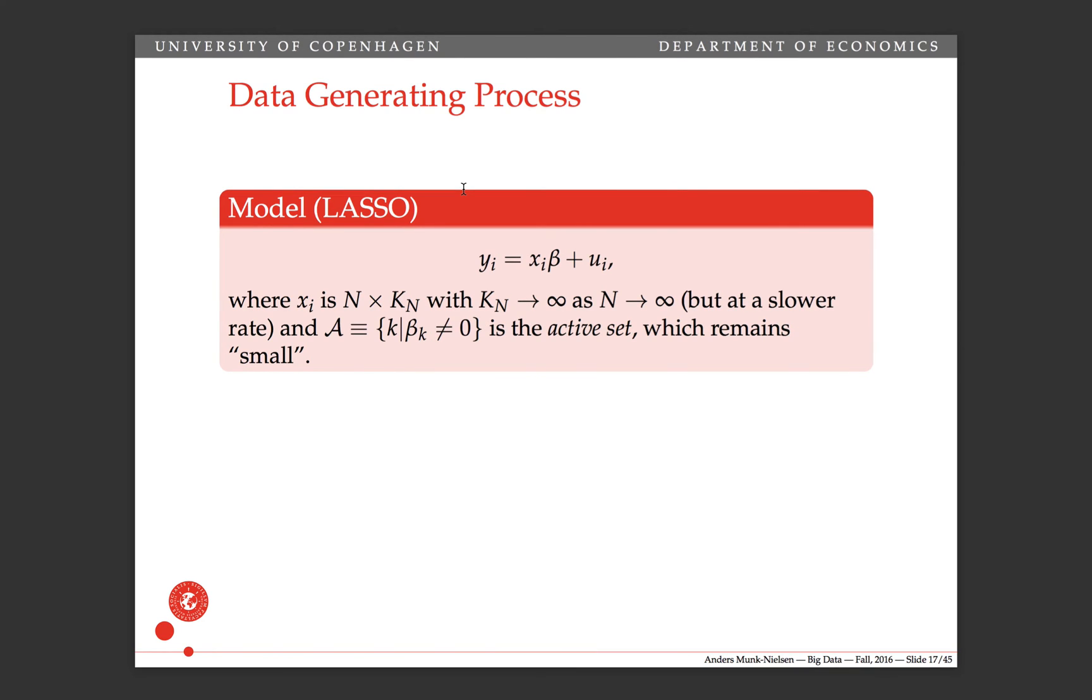If we want to be formal and write up the mathematical model for LASSO, then it looks like this. y is equal to xi beta plus u, and u needs to be uncorrelated with the x's. And xi is n by kn, where kn, the number of variables, grows as n grows but at a slower rate. And this set here, the set of k's or variables for which beta k is non-zero, this is called the active set. That set remains small. So as n increases, we get more and more variables, but some of these new variables that we get, most of them perhaps have a coefficient of zero.